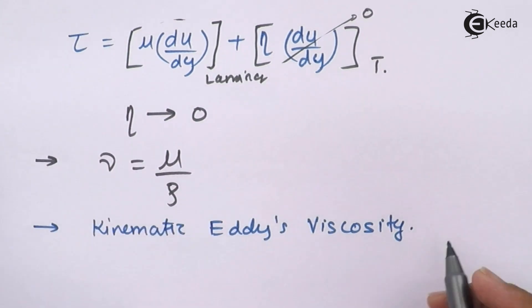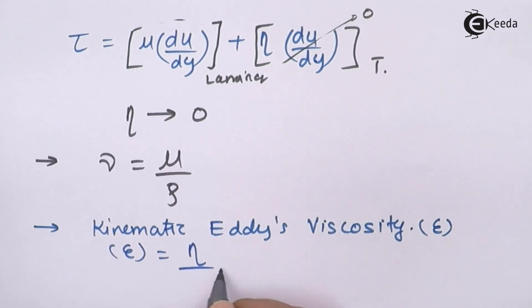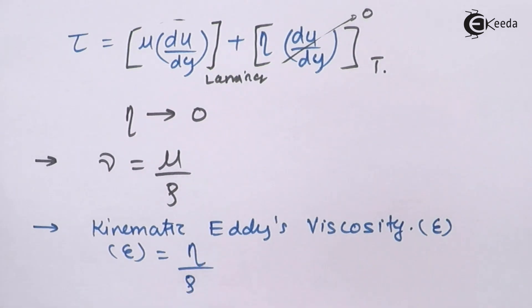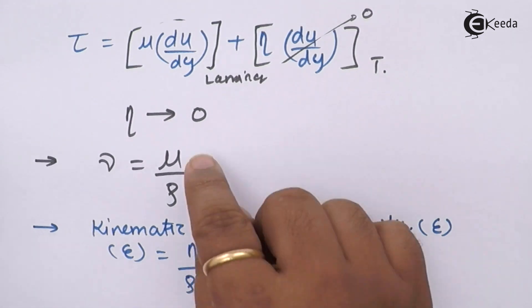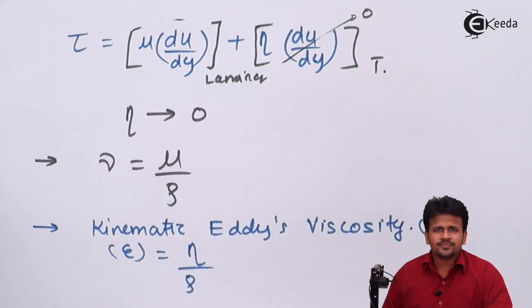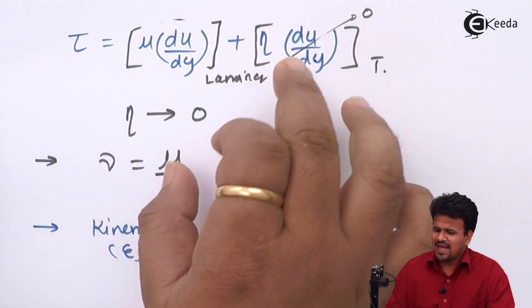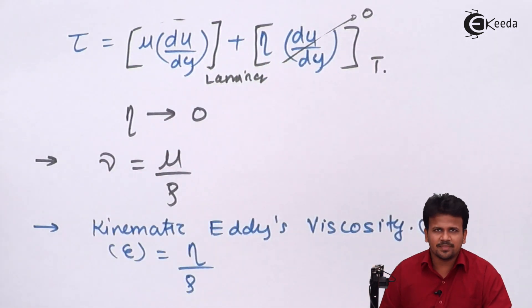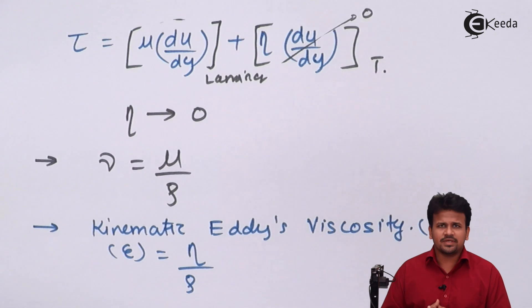Kinematic eddy viscosity is denoted by epsilon, and by definition it can be written as epsilon equals eta upon rho. So kinematic eddy viscosity is defined as the ratio of eddy viscosity to the density of the fluid, similar to kinematic viscosity in laminar flow, which is the ratio of coefficient of viscosity to density. Eta is not a fluid property but a flow property — it changes from one point to another and is a function of one or more variables such as velocity, pressure, viscosity, temperature, and so on.